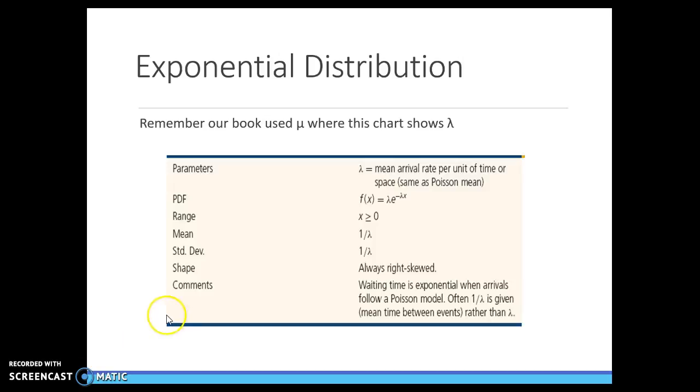So our parameters, this is lambda, which in this case lambda represents the mean arrival rate per unit of time or space. We'll come back to that. The probability distribution function you can see is exponential. Our range is simply above or equal to zero.